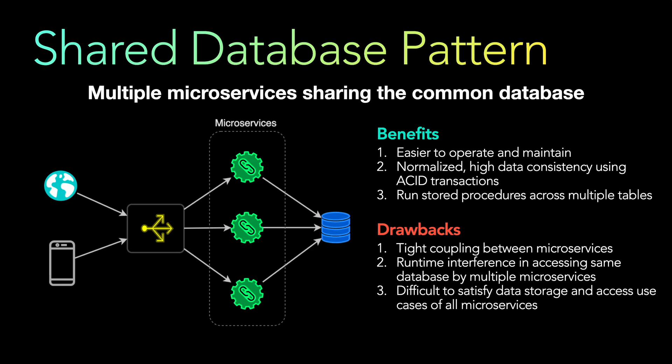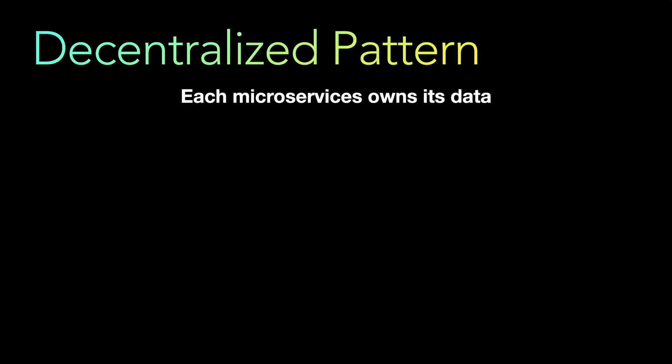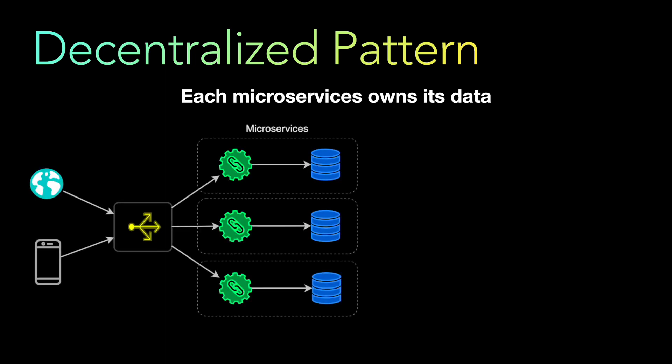The next pattern is the opposite of the shared database — it's the decentralized pattern, also called database-per-service. Each microservice owns its own data. Compared to the previous diagram where there was a single shared database, here each microservice owns its own database.